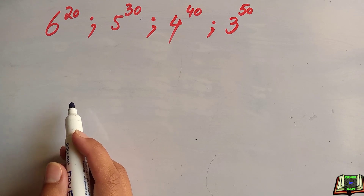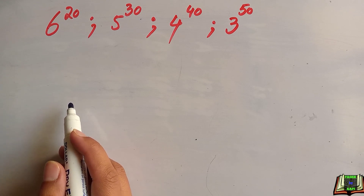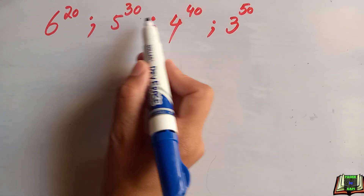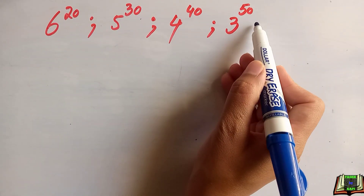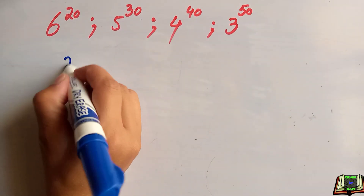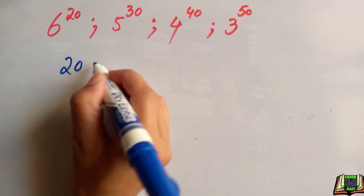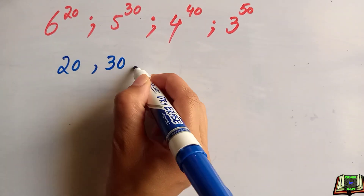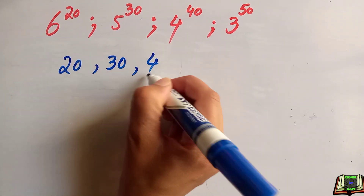The given numbers are 6 to the power 20, 5 to the power 30, 4 to the power 40, and 3 to the power 50. To find the largest number, we will focus on the powers.